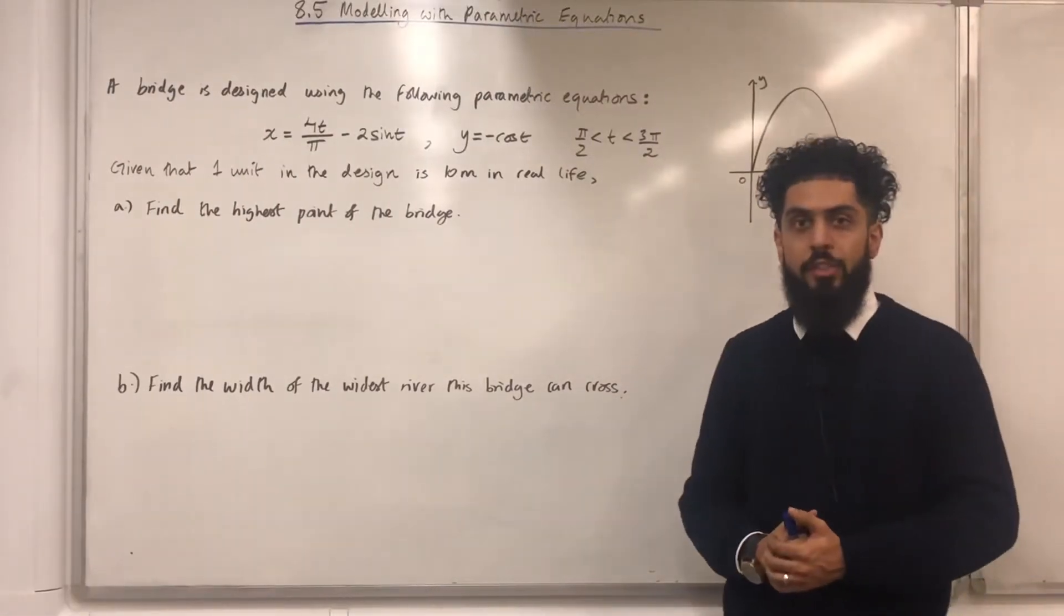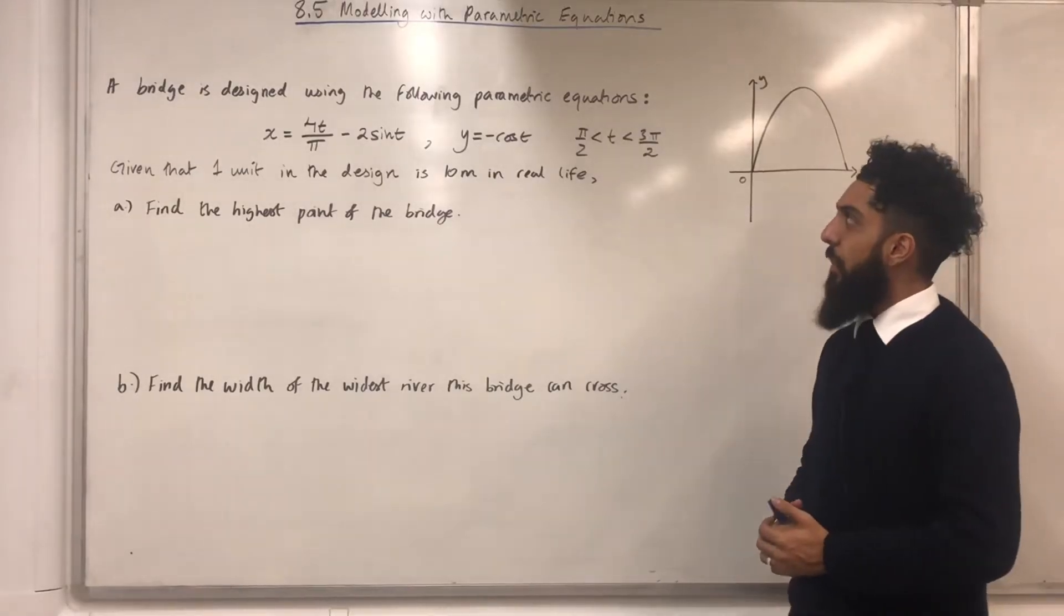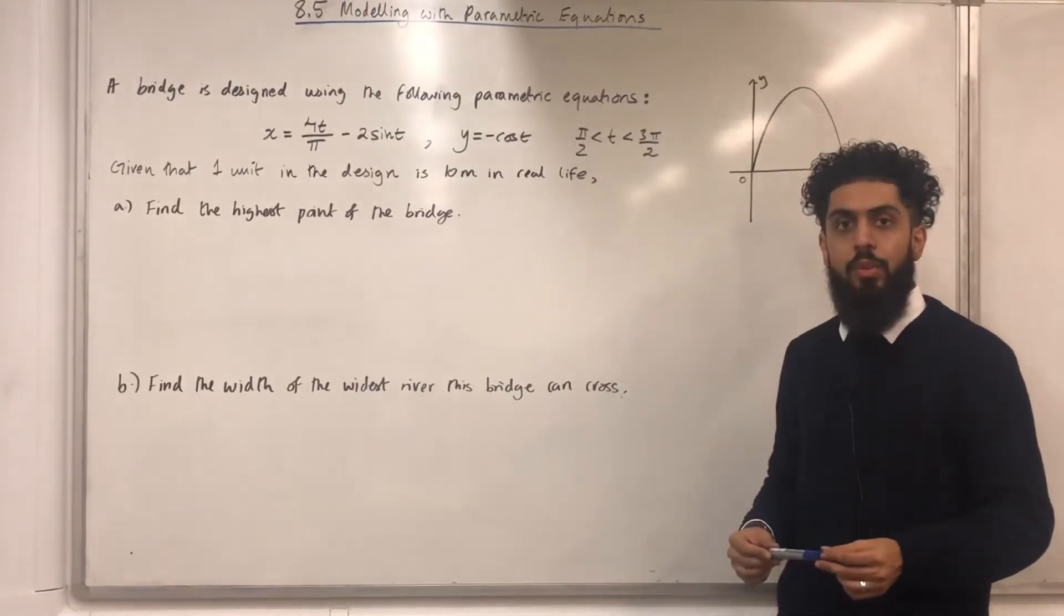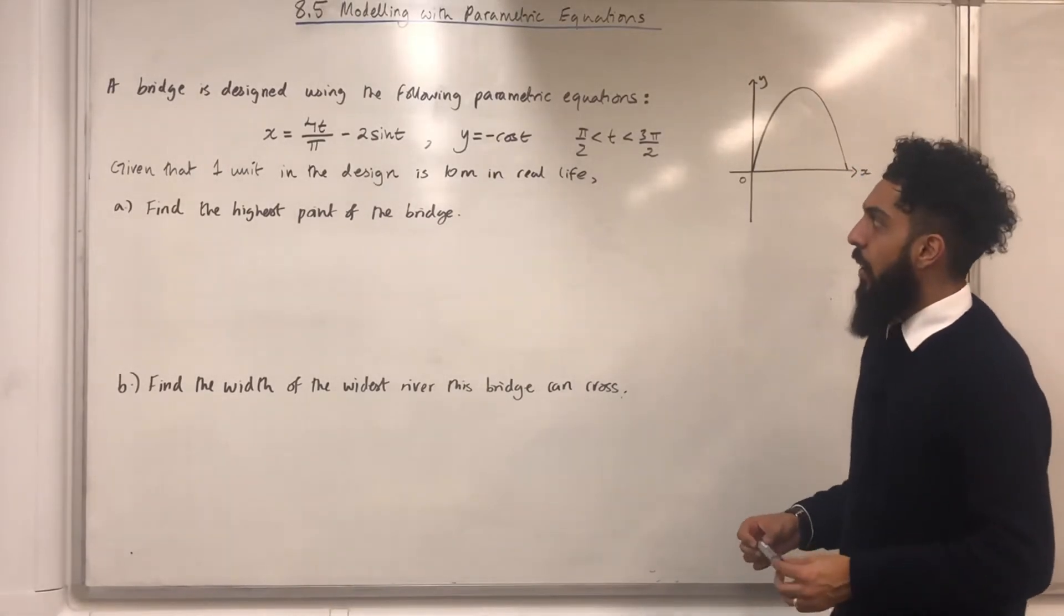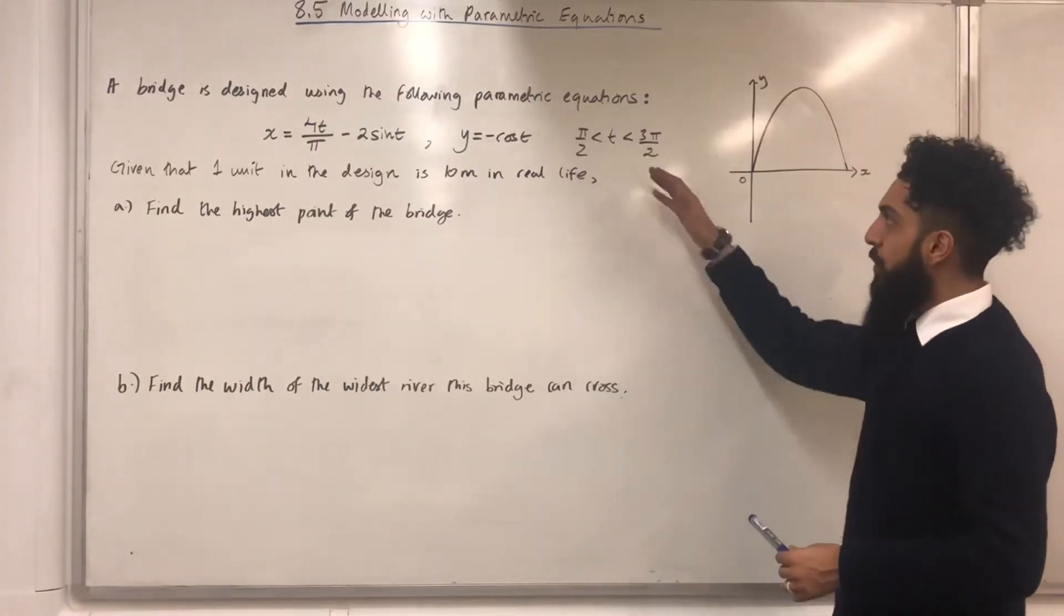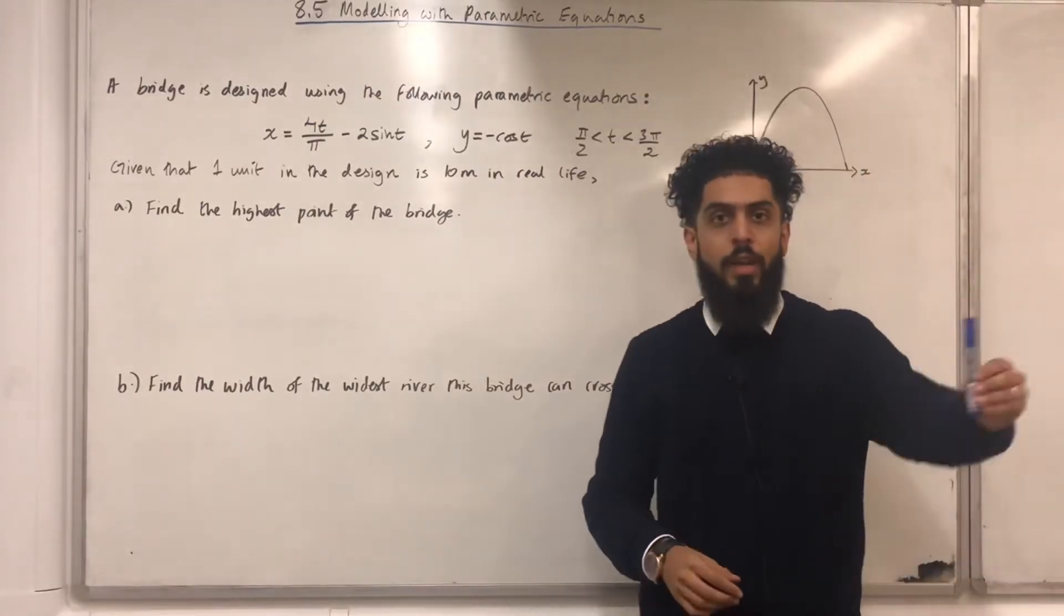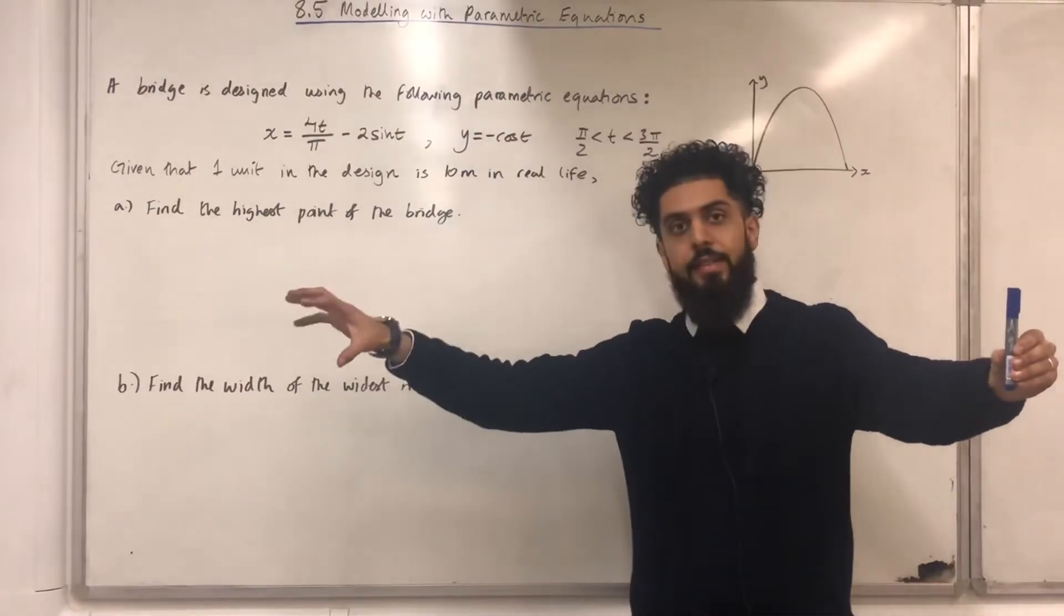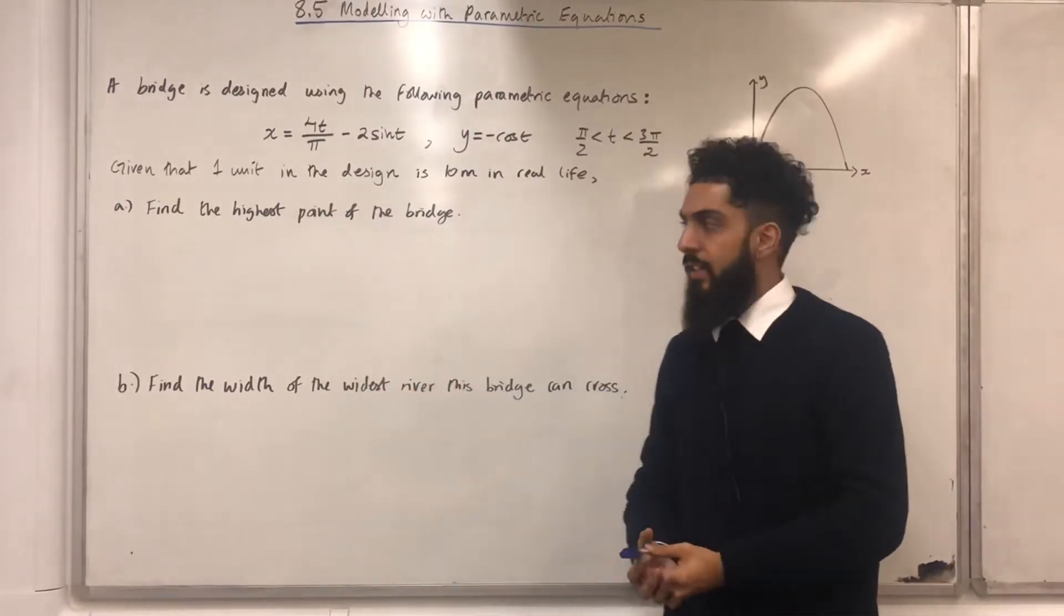Here is another past exam question. A bridge is designed using the following parametric equations: x equal 4t over pi minus 2 sine t, y equal minus cos t, t is more than pi over 2 but less than 3 pi over 2. Given that one unit in the design represents 10 meters in real life, a very important scale.